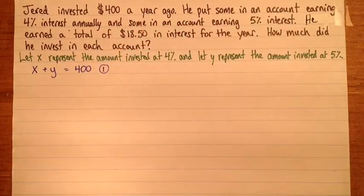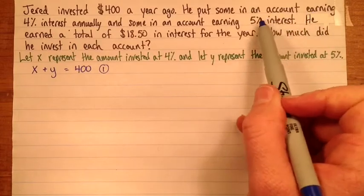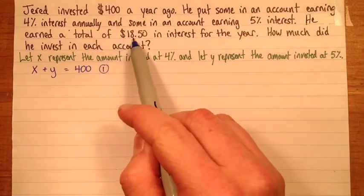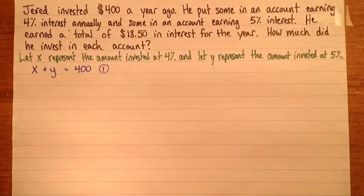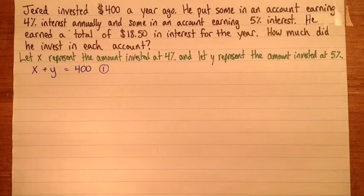The second equation is a little bit more complicated. We need to write that 4% of the X plus 5% of Y is equal to a total of 18.50. So, two things you need to remember. First of all, that to change 4% to a decimal value, we always need decimal values if we're calculating with percent, we won't leave it as a percent. So to change it to a decimal, you divide by 100.